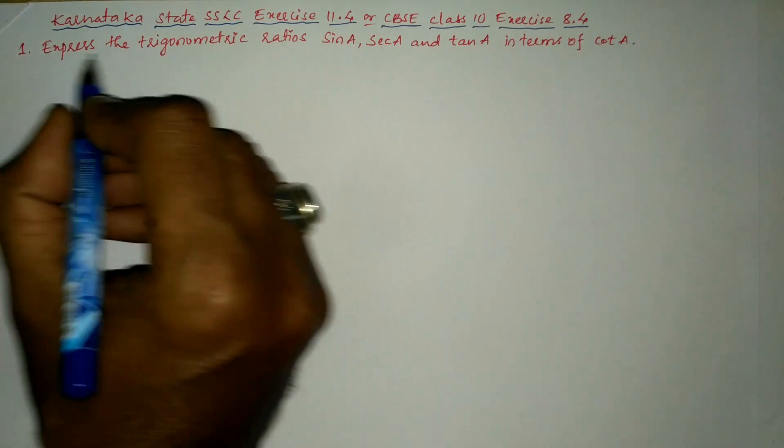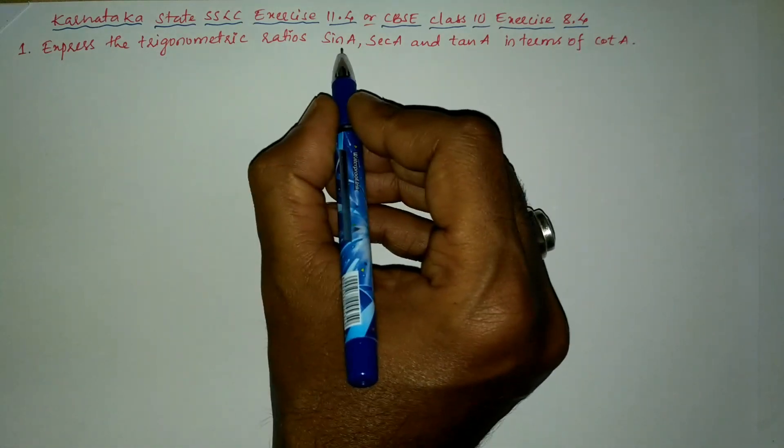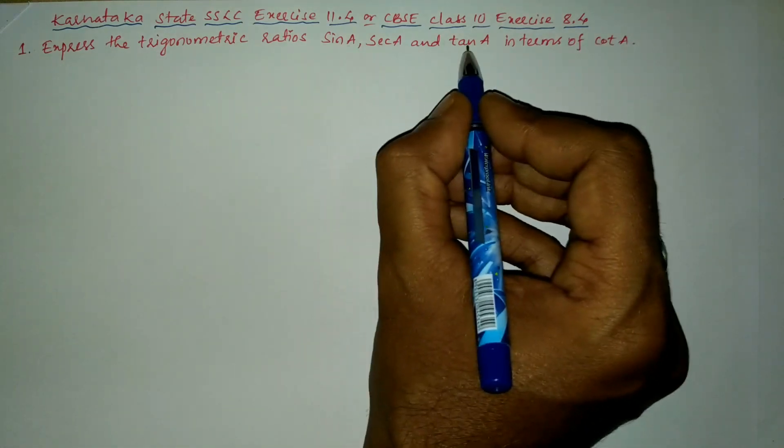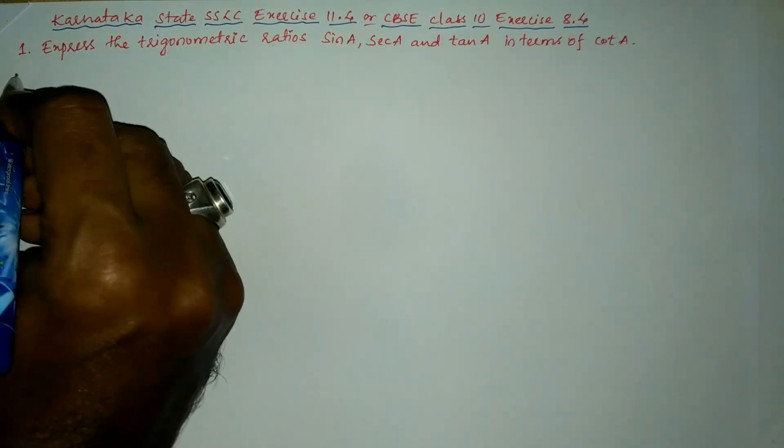Question number 1: Express the trigonometric ratios sin a, sec a and tan a in terms of cot a.